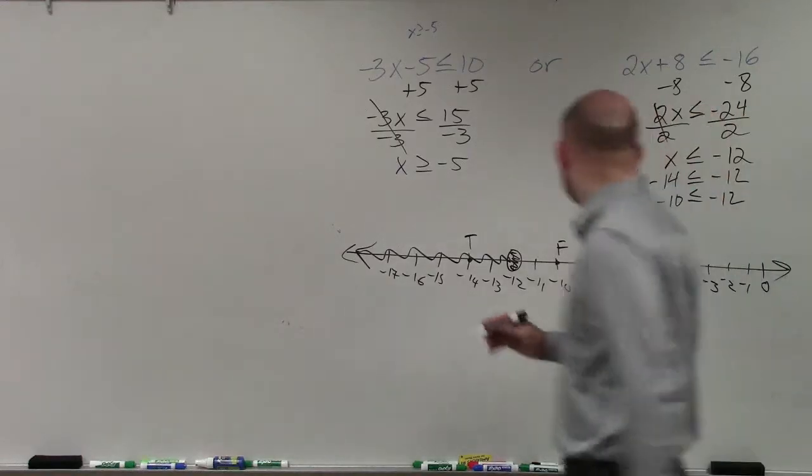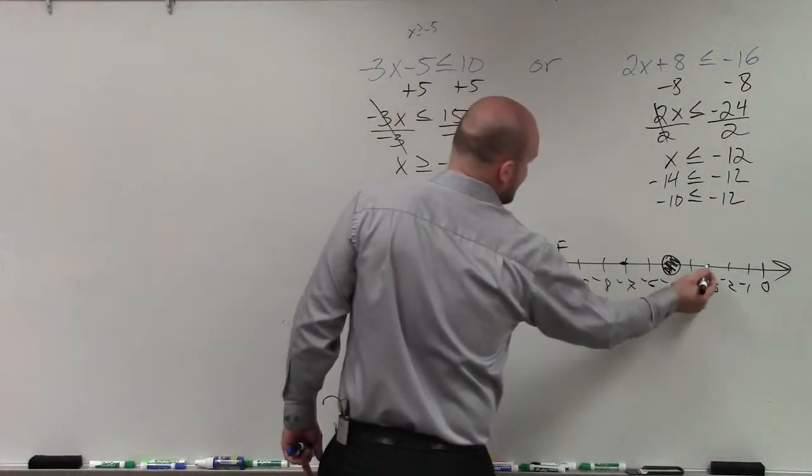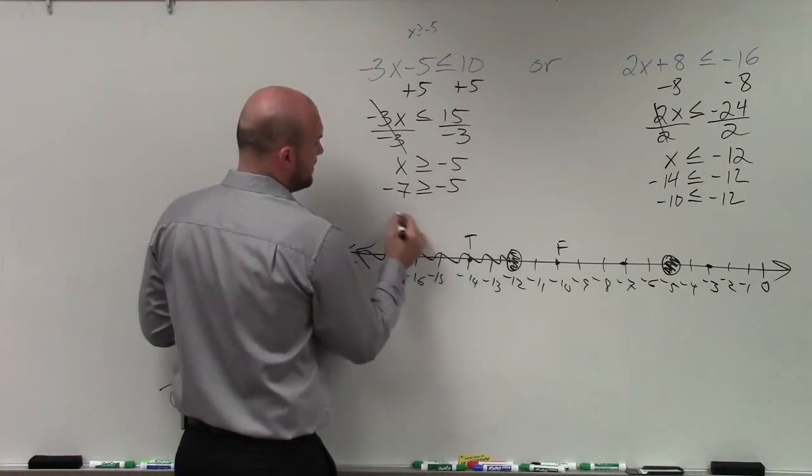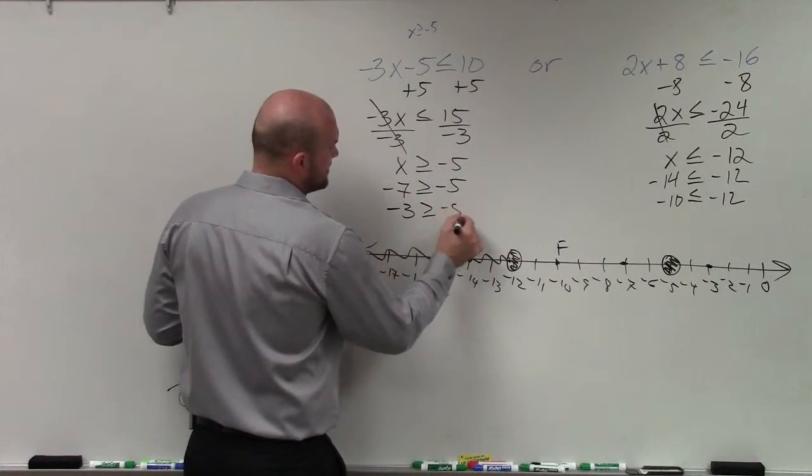Over here, we'll do our two points. I'll pick 7 and 3. Negative 7 is greater than or equal to negative 5. And negative 3 is greater than or equal to negative 5.